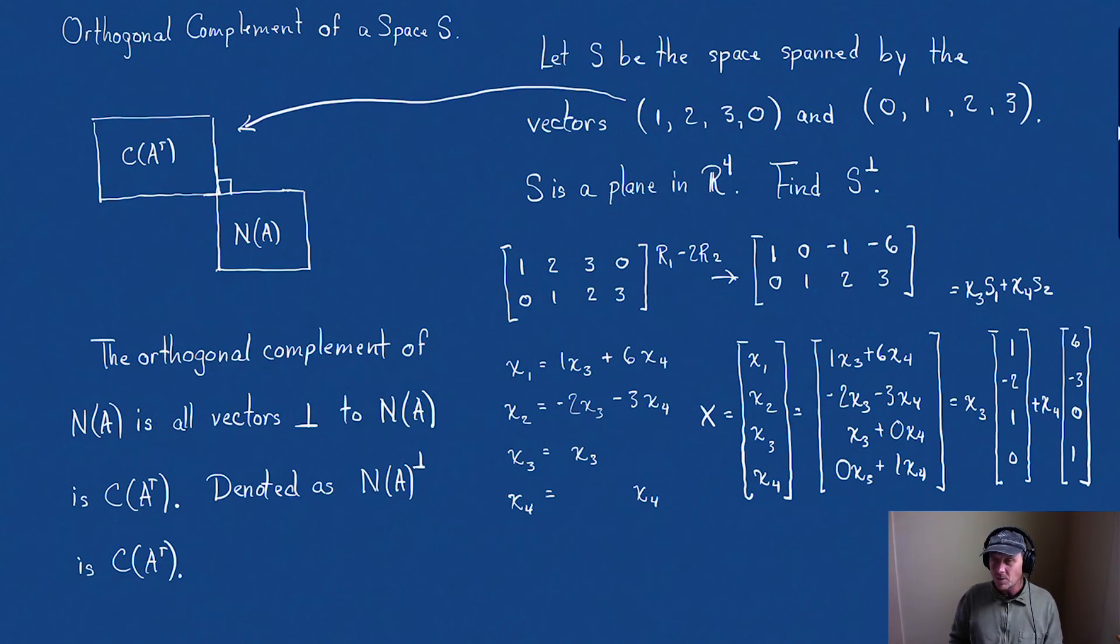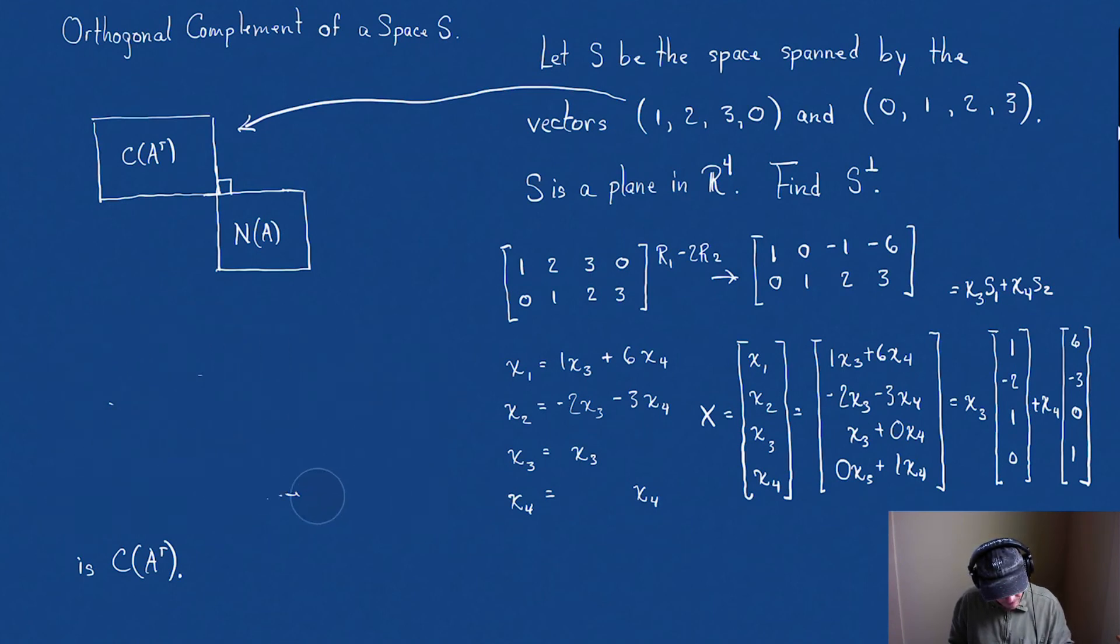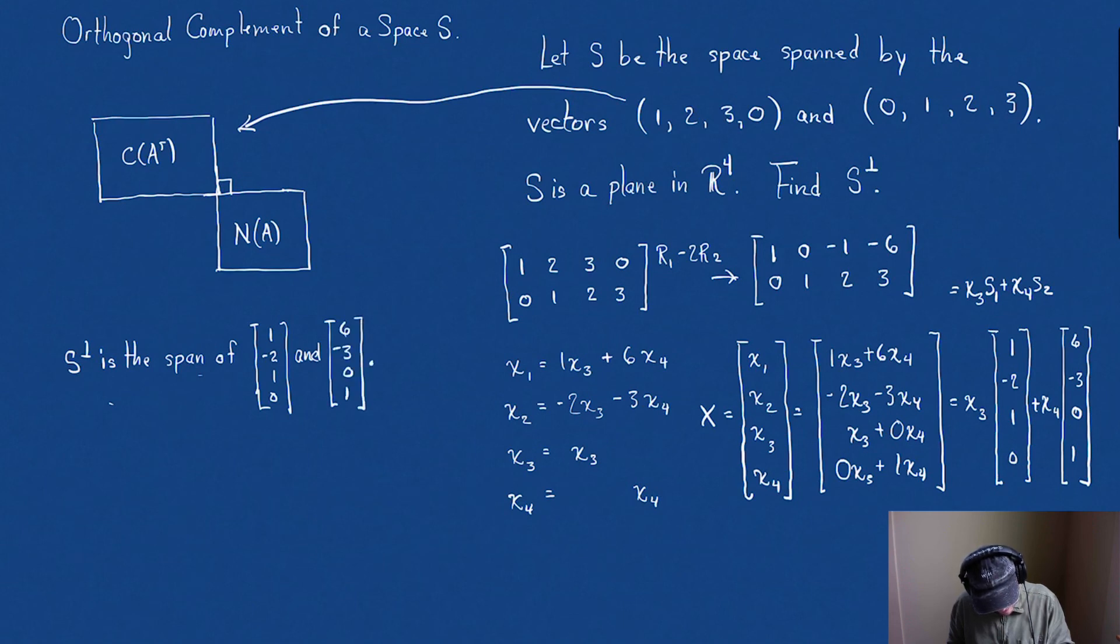We started with two independent vectors. We found two more independent vectors that are also orthogonal. And we have found S perp. So to write that, I'm going to come over here. But S perp is the span of the vector 1, minus 2, 1, 0 and the vector 6, minus 3, 0, 1. There we go. We've done it. That is S perp.